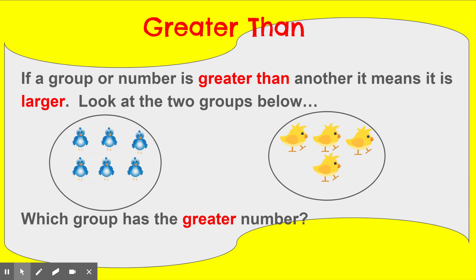So look at the two groups. We have the bluebirds and we have the yellowbirds. Which group has the greater number? Let's count the bluebirds: one, two, three, four, five, six. I see six bluebirds. And let's count the yellowbirds: one, two, three, four. I see four yellowbirds.